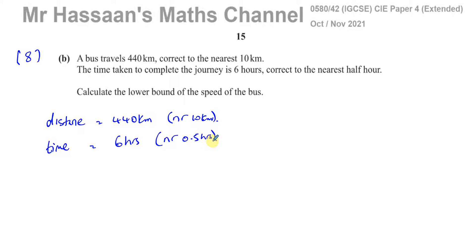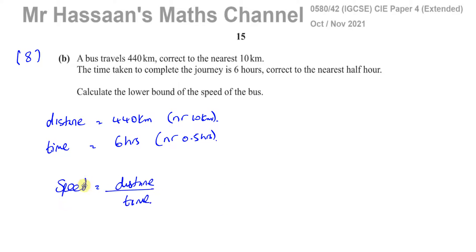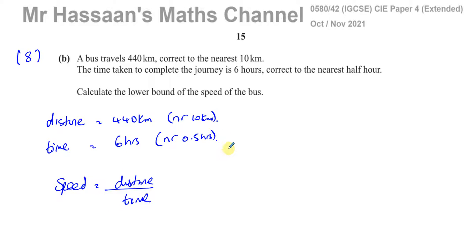Calculate the lower bound of the speed of the bus. We know that speed equals distance divided by time. So we want to find the upper and lower bounds of the distance and time, and then use the correct versions so that we can find the lower bound of the speed of the bus.